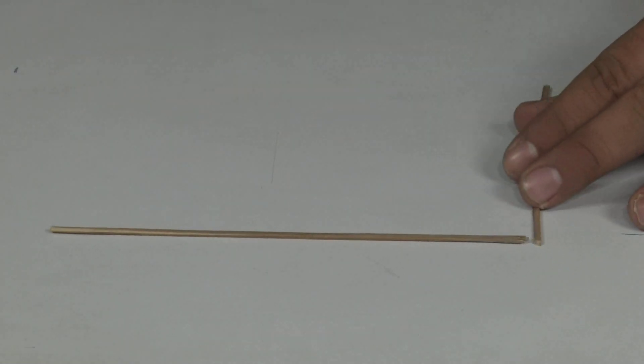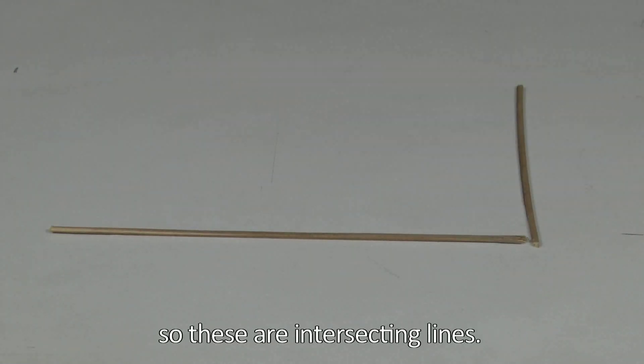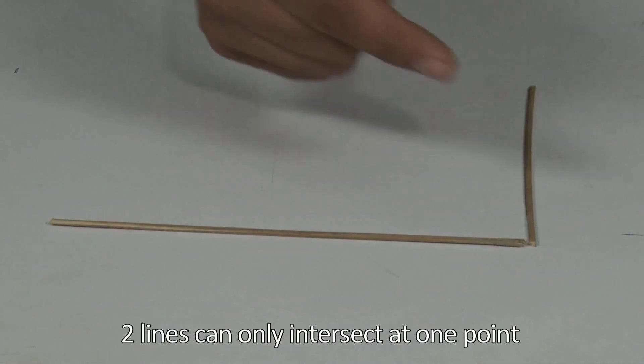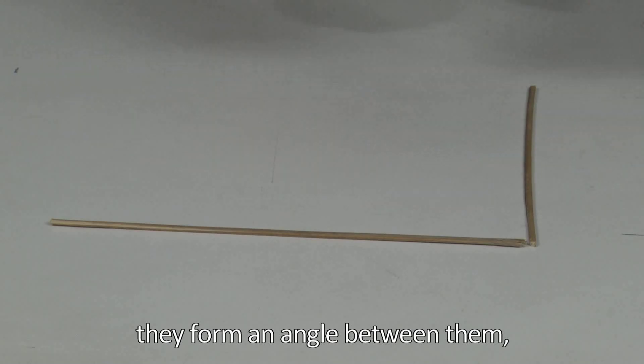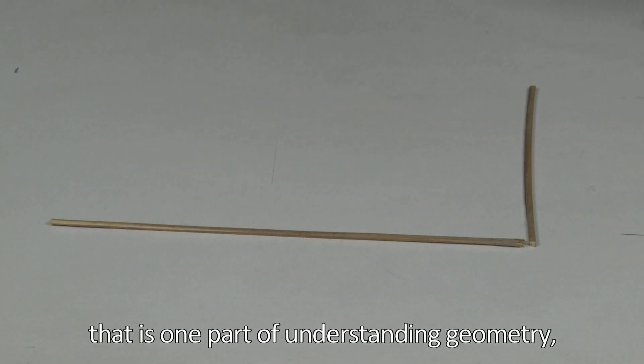I have a line like this? So these are intersecting lines. Two lines can only intersect at one point, and at the point where they intersect, they form an angle between them. That's one part of understanding geometry. The other